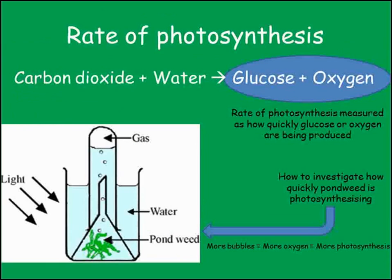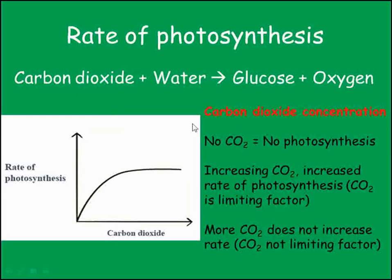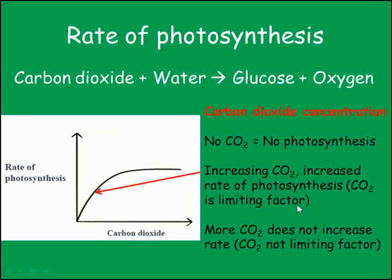Let's take a look at the factors that affect how fast a plant can photosynthesise. The rate of photosynthesis can be measured as how much glucose or oxygen is being produced. For plants living under water, such as waterweed, it is easy to count the number of oxygen bubbles produced in a certain time period. Photosynthesis requires carbon dioxide, so if there is none, the plant will not photosynthesise at all. Increasing the amount of carbon dioxide available increases the rate of photosynthesis — during this time, carbon dioxide is the limiting factor, the thing that is stopping the plant from photosynthesising faster.